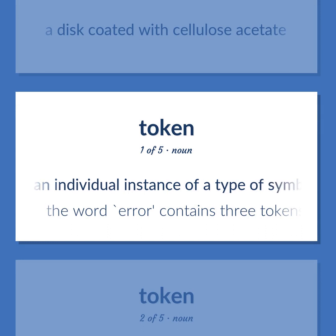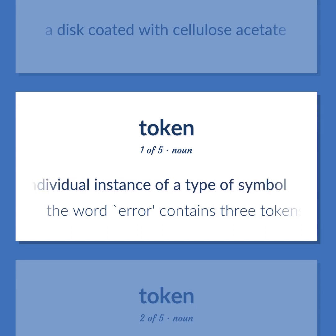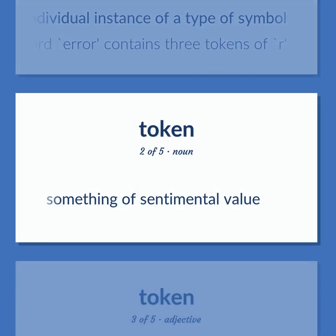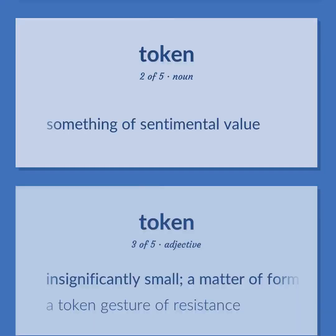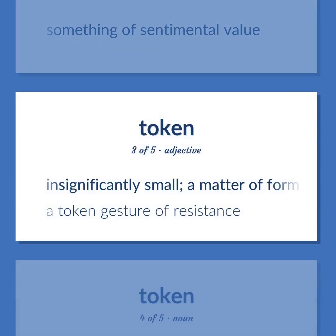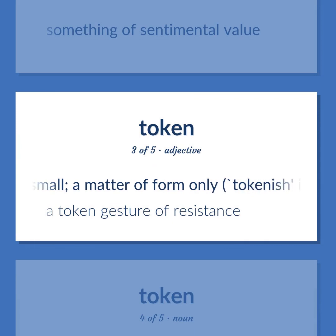Token: an individual instance of a type of symbol. Example: The word 'error' contains three tokens of R. Something of sentimental value. Insignificantly small; a matter of form only — 'tokenish' is informal. Example: A token gesture of resistance.